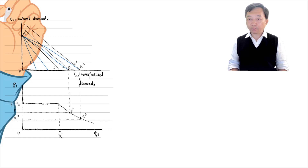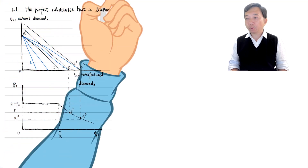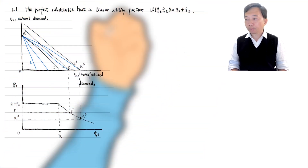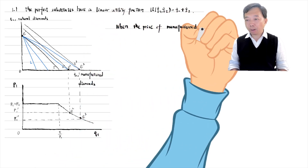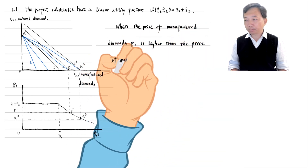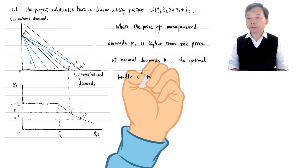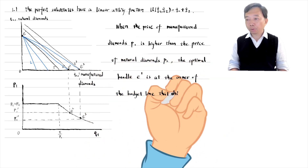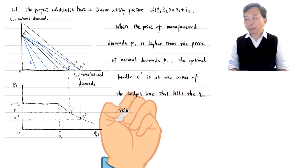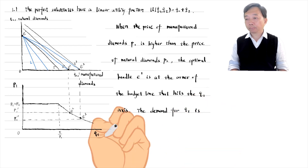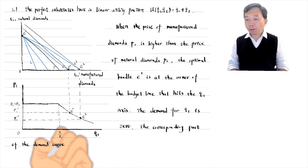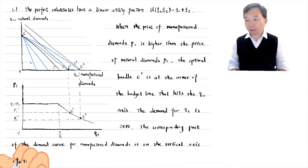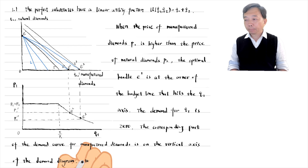The indifference curves are straight lines with a slope of minus one because consumers view them as perfect substitutes. When the price of manufactured diamonds P1 is higher than that of natural diamonds P2, the optimal bundle E1 is at the corner of the budget line that hits the Q2 axis. Consumers only buy natural diamonds; the demand for manufactured diamonds Q1 is zero. The corresponding part of the demand curve for manufactured diamonds is on the vertical axis of the demand diagram, where the vertical axis measures the price of manufactured diamonds and the horizontal axis measures the quantity demanded.